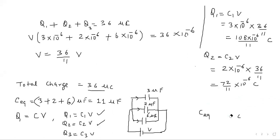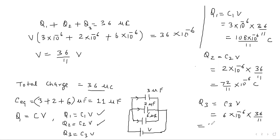And for C3, which is 6 microfarad, Q3 will be equal to C3 times V, that is 6 into 10 to the power minus 6 into 36 by 11, which becomes 216 into 10 to the power minus 6 by 11 coulomb. Writing in terms of microcoulomb, our answers are 108 by 11 microcoulomb, 72 by 11 microcoulomb, and 216 by 11 microcoulomb. That is our answer.